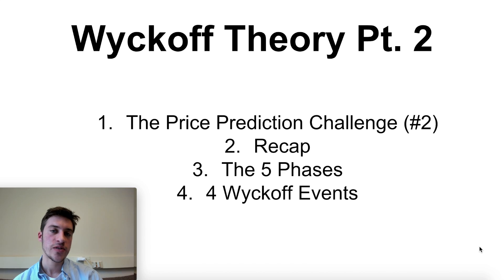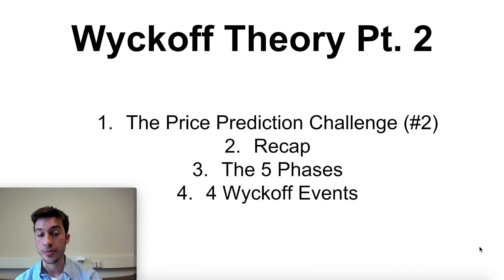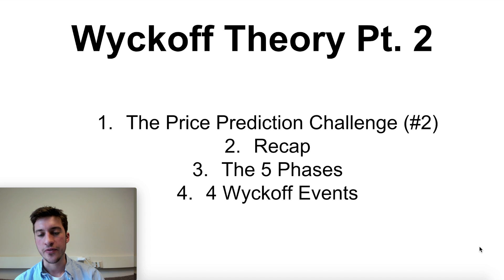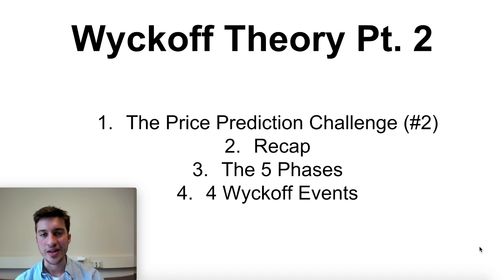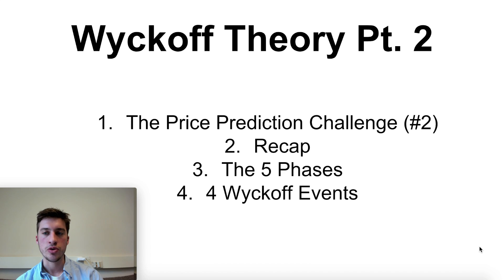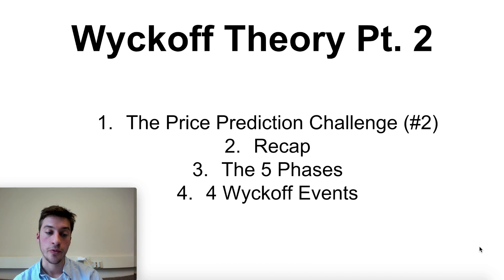In today's video, we're going to be going over five examples of consolidation and labeling them either accumulation or distribution. We're going to be looking at the five different kinds of phases, A through E, within consolidation that you're likely to see. And we're also going to go into a bit of the individual details of consolidation moves before they turn into trends.